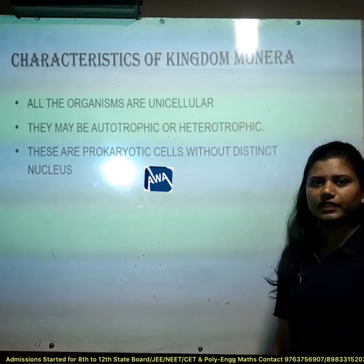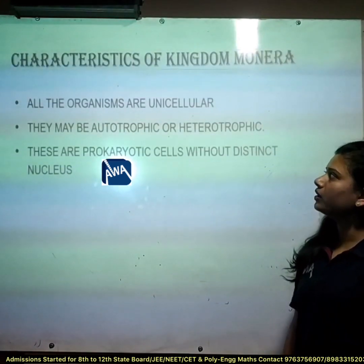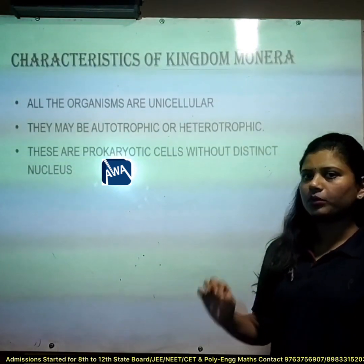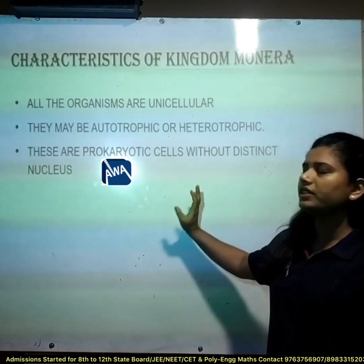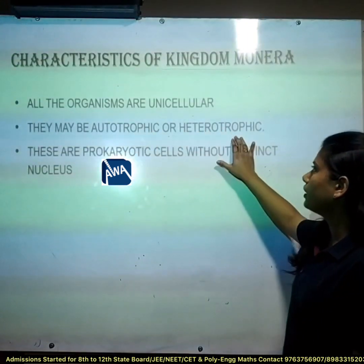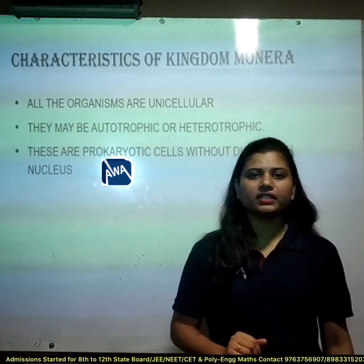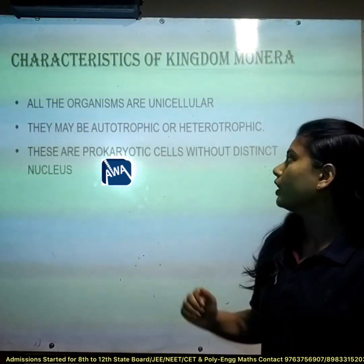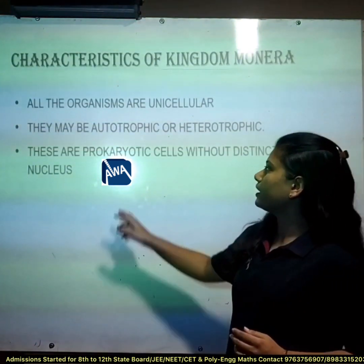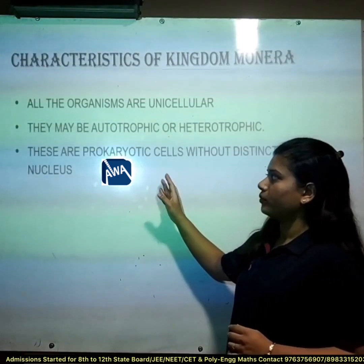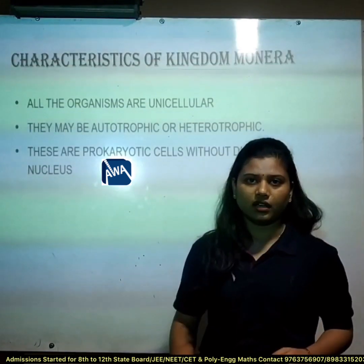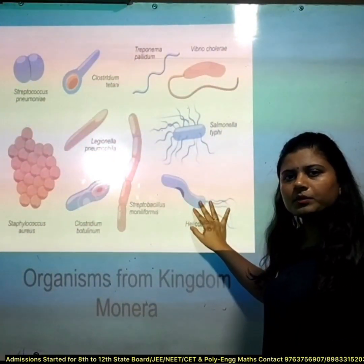Now let's see the characteristics of Kingdom Monera. First, all organisms are unicellular. They may be autotrophic or heterotrophic — autotrophic means they prepare their own food, heterotrophic means they depend on another for their food. These are prokaryotic cells without a distinct nucleus.